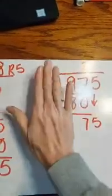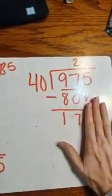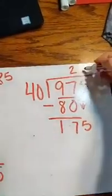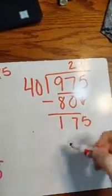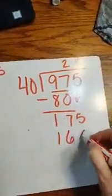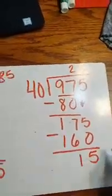Again, we drop a number. How many 4s are in 17? 16. Yep, 4. 4 times 4 is 16. Put your 0 back on. And subtract. Okay?